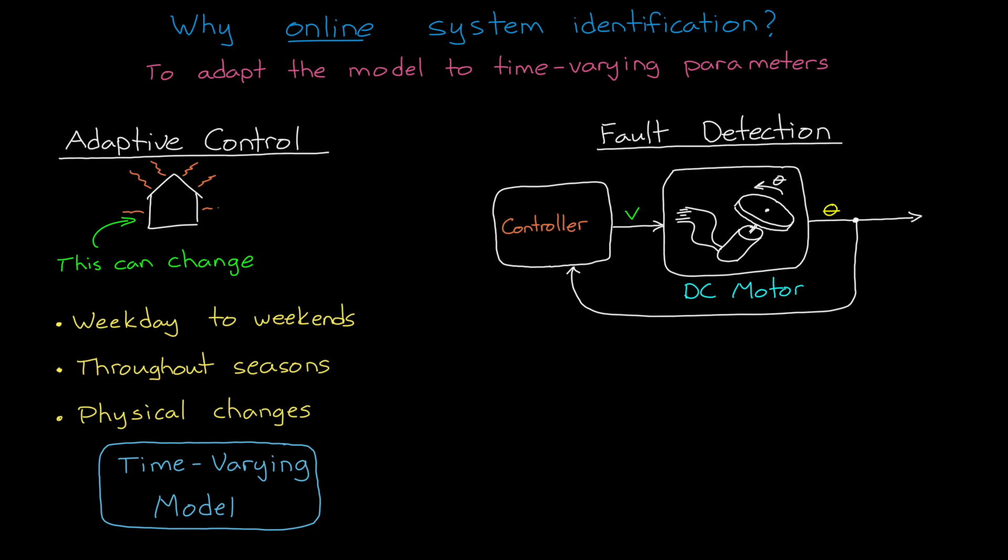Now, instead of setting up a fault test that looks at current draw and motor speed and motor acceleration, and then tries to come up with a threshold that indicates a high friction scenario, we could approach this with online system identification.